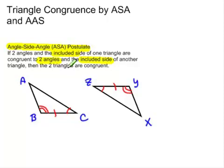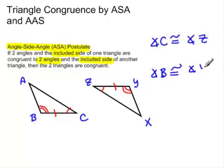So here we have an example of what that looks like. Notice that we have angle C is congruent to angle Z. We have angle B is congruent to angle Y.